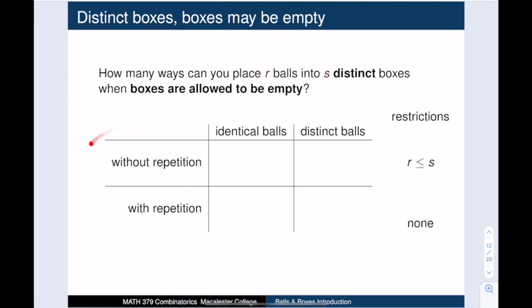First, let's talk about the no repeated boxes case. So every box is either empty or gets exactly one ball. If we are placing our ping pong balls into s boxes, then I must simply tell you the locations that I chose. In other words, I must choose a subset of boxes of size r. And there are s choose r ways to do this.